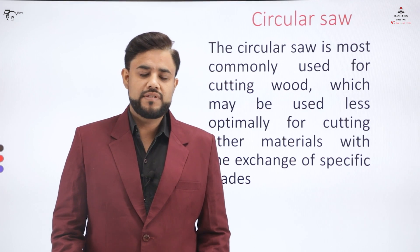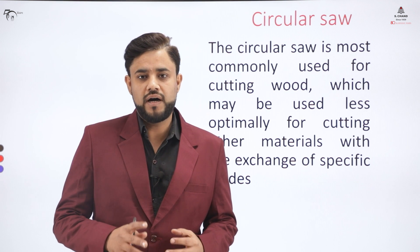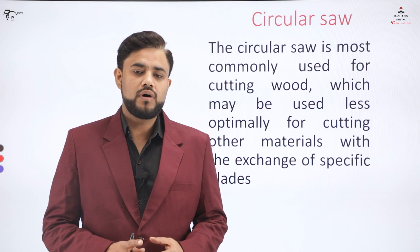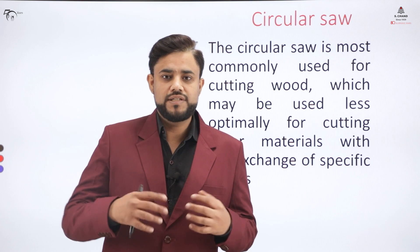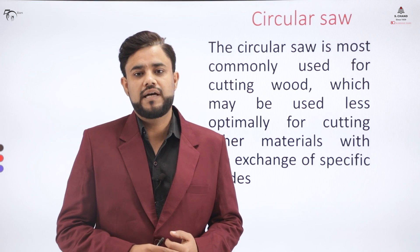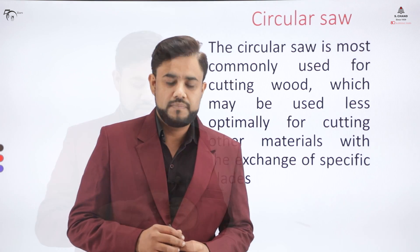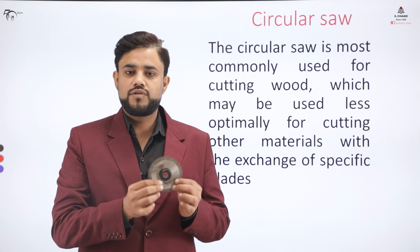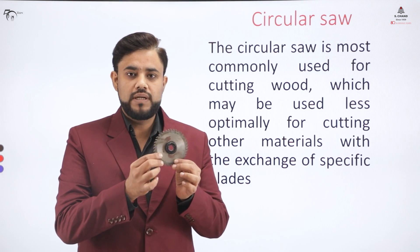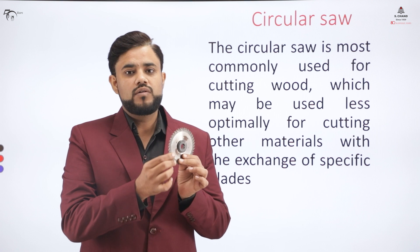A circular saw, as the name suggests, has a circular tool. With the help of that circular tool we are able to cut the material. The material that can be cut is primarily wood, and with certain changes in the material of the tool we can cut other materials as well. This is a circular saw blade — it is circular in shape and has cutting edges, with which we can cut the material.